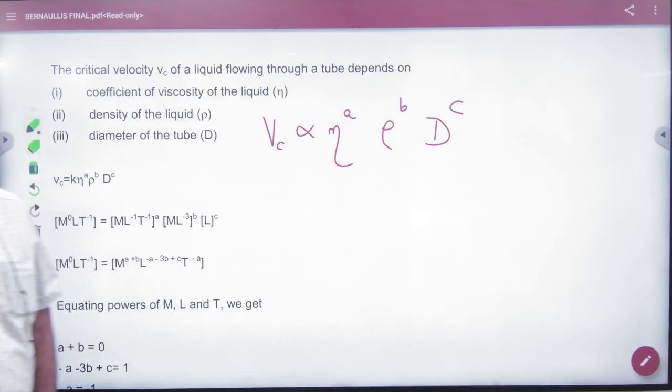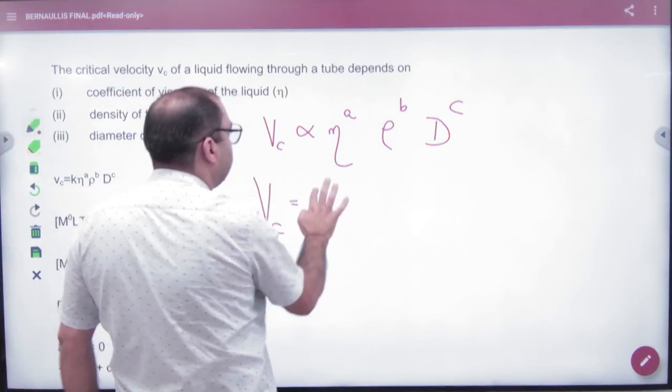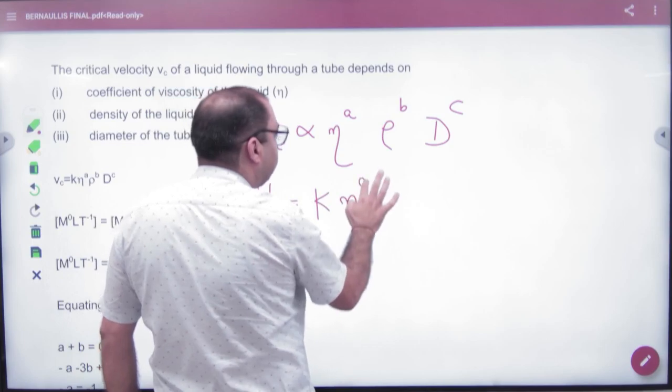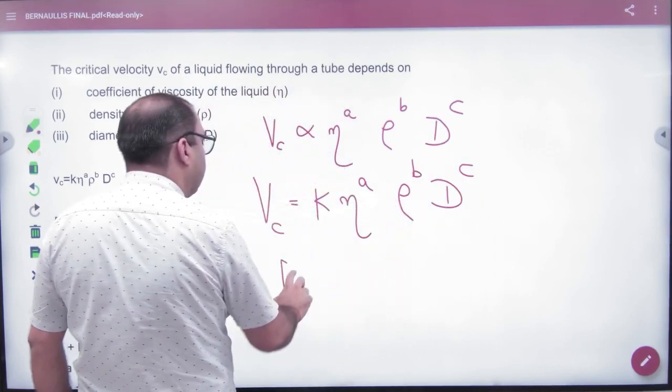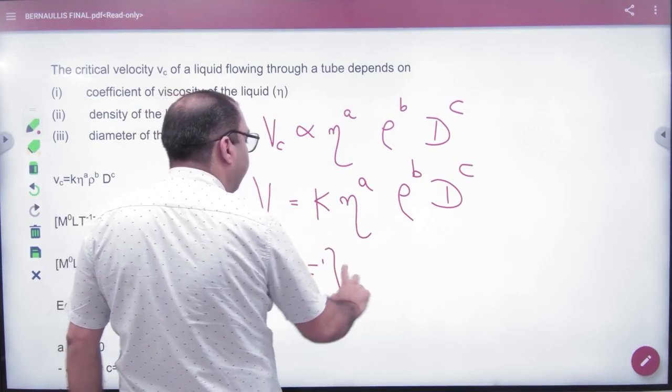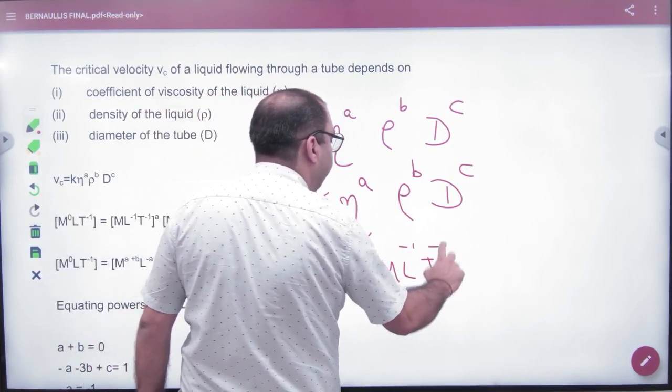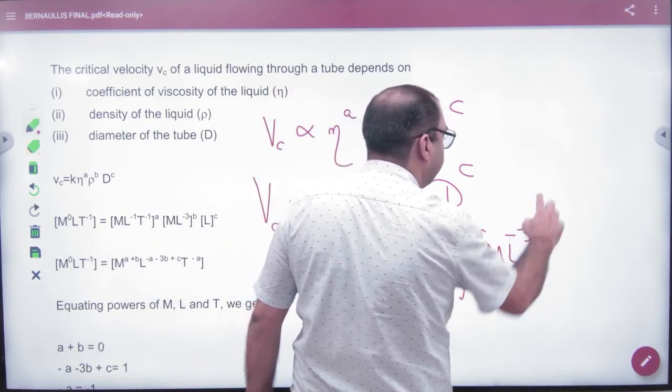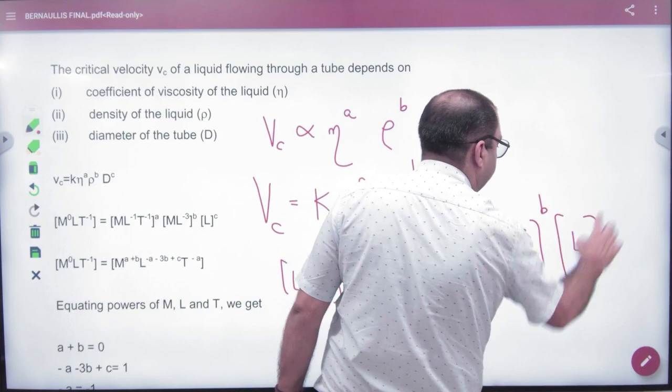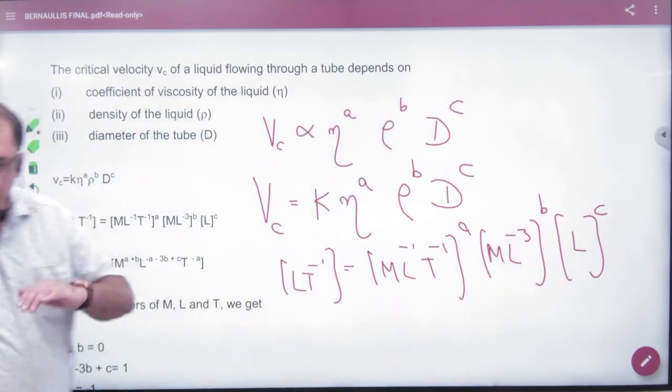ABC unit and dimension. So here critical velocity is some constant eta raised to power a, density b, diameter c. Critical velocity is LT^-1, coefficient of viscosity, density is M L^-3, and diameter is L. So here we will solve them.